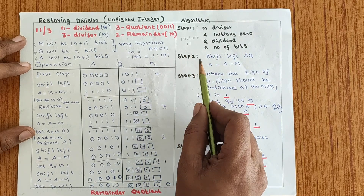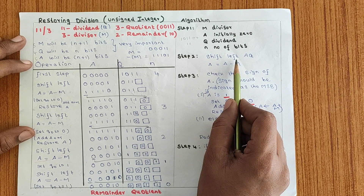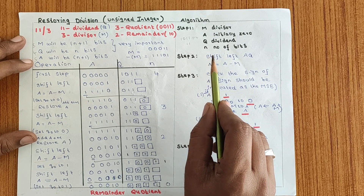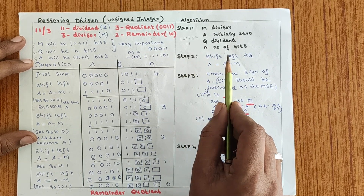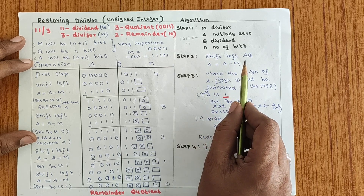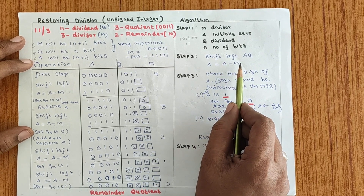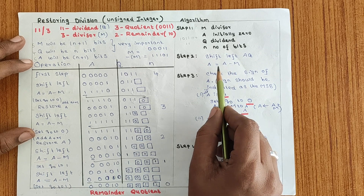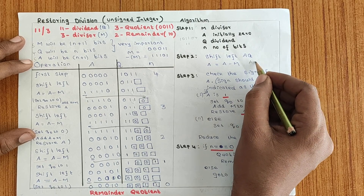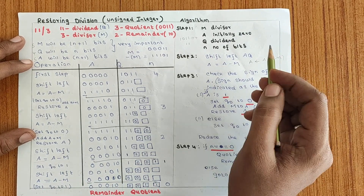After the second step, we are going to perform shift left. In both multiplication of positive numbers and Booth algorithm, we performed arithmetic shift right or normal shift right. Here we perform shift left. Shift left means we move the value from the left. Then we perform A = A − M, which we can rewrite as A ← A + (−M).